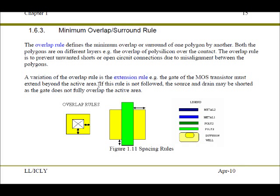So, if the extension rule is not followed, then the source and drain may be shorted as the gate does not fully overlap the active area.